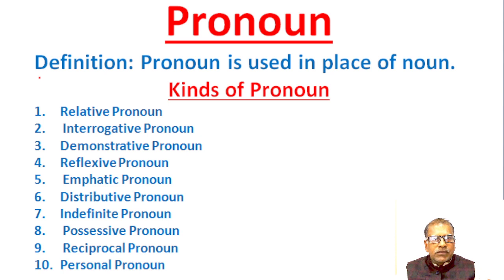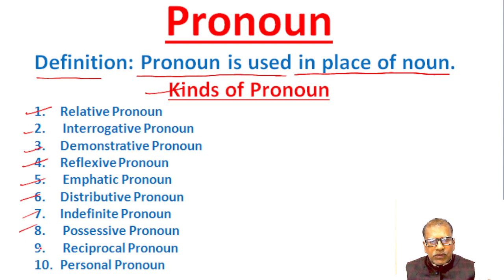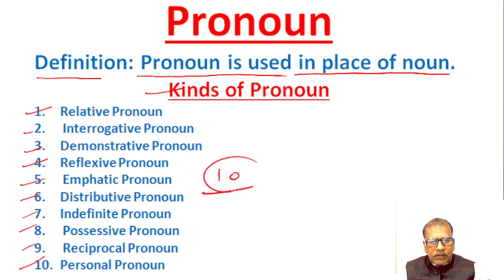Pronouns — definition: a pronoun is used in place of a noun. There are 10 kinds of pronoun: relative, interrogative, demonstrative, reflexive, emphatic, distributive, indefinite, possessive, reciprocal, and personal.